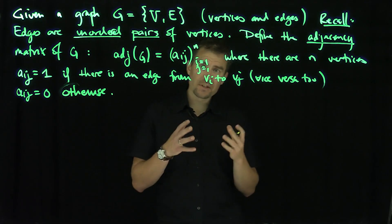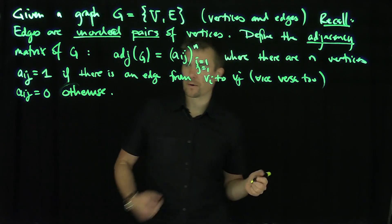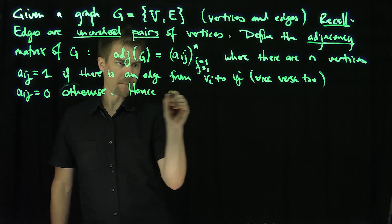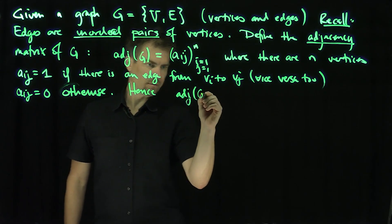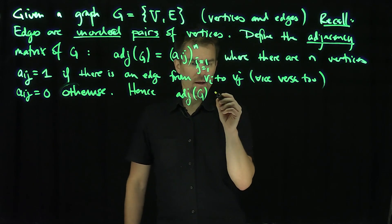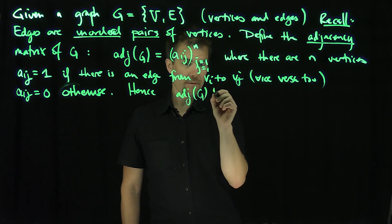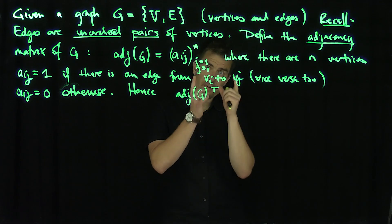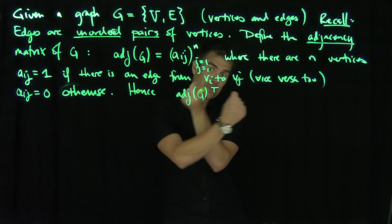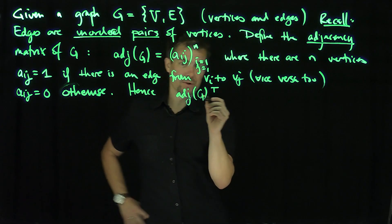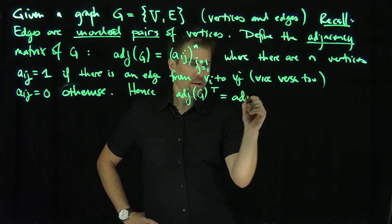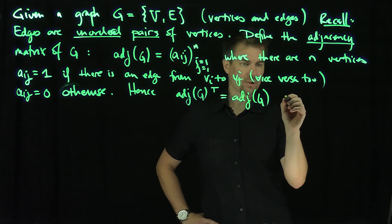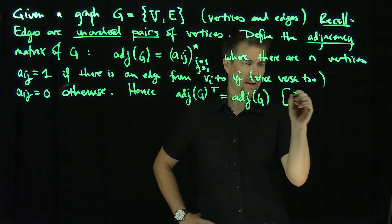So the adjacency matrix has a whole bunch of 0s and 1s. If I transpose it, I know there's an edge between i and j, and there's also an edge between j and i since they're unordered. So the transpose of the adjacency matrix equals the adjacency matrix of G — that says it's a symmetric matrix.